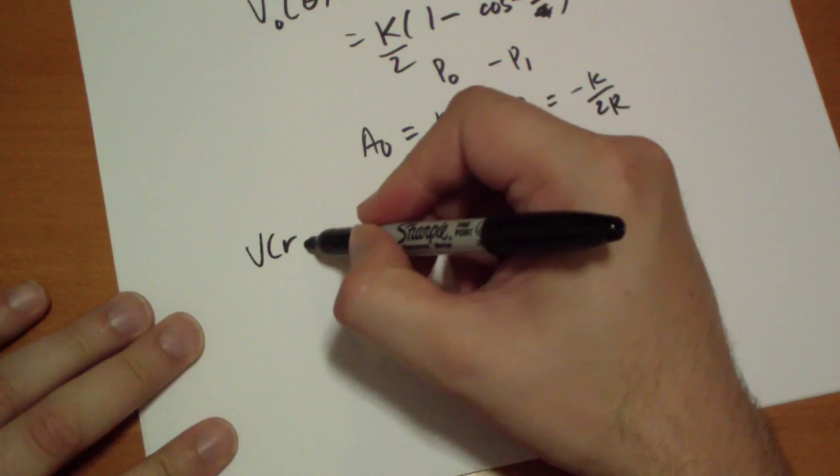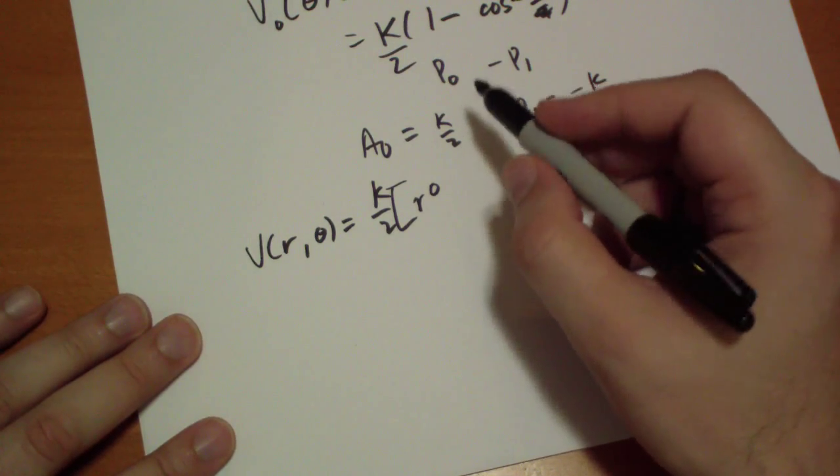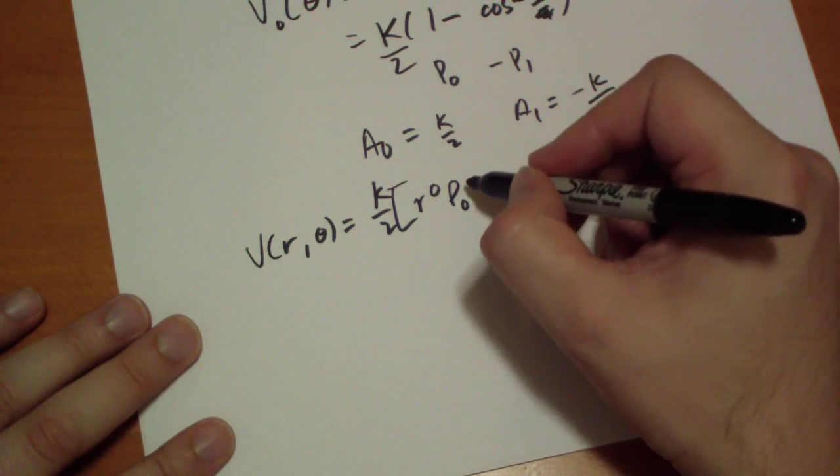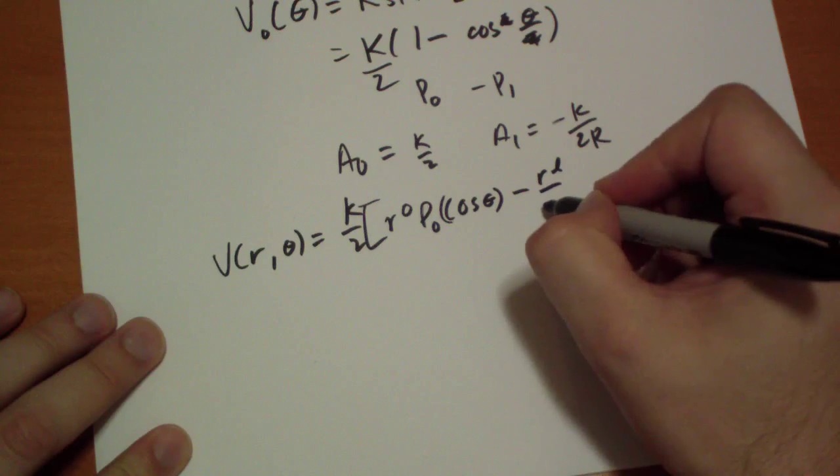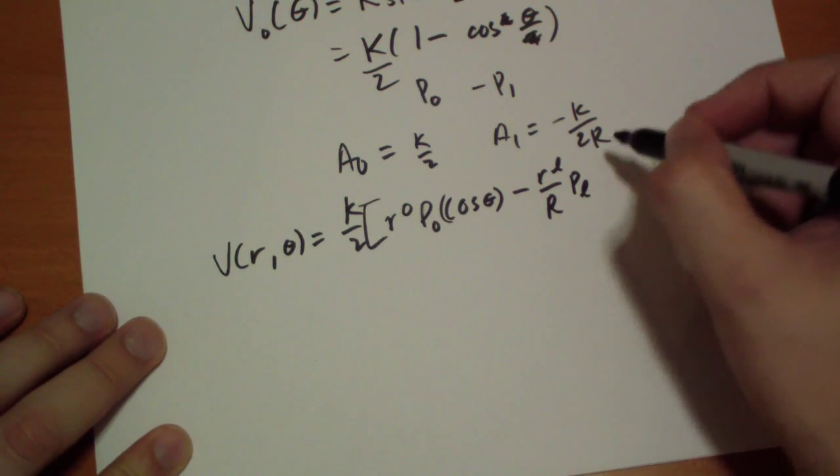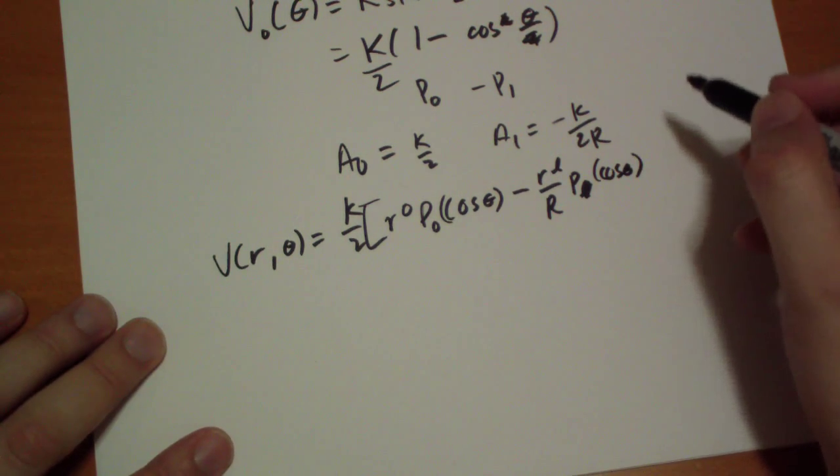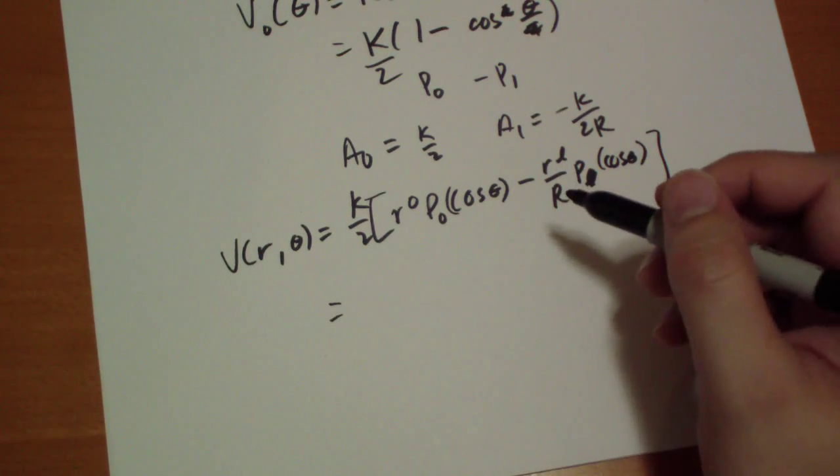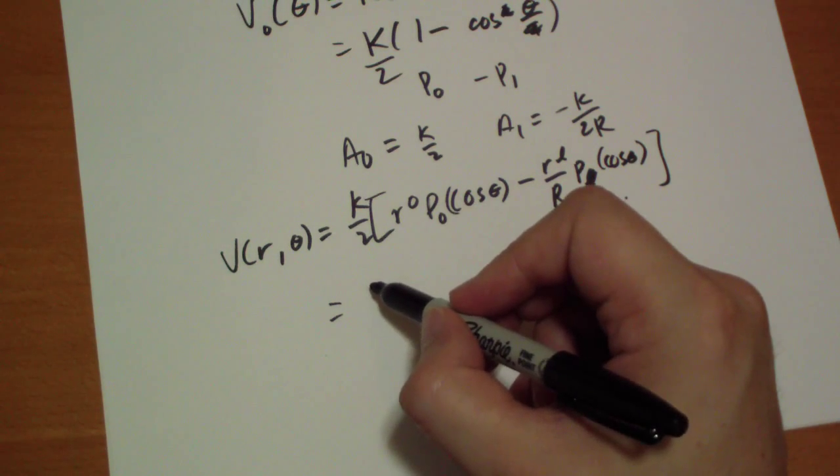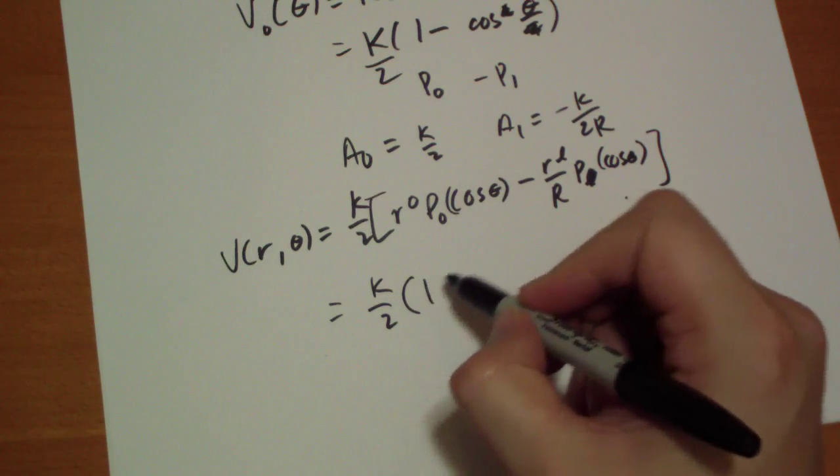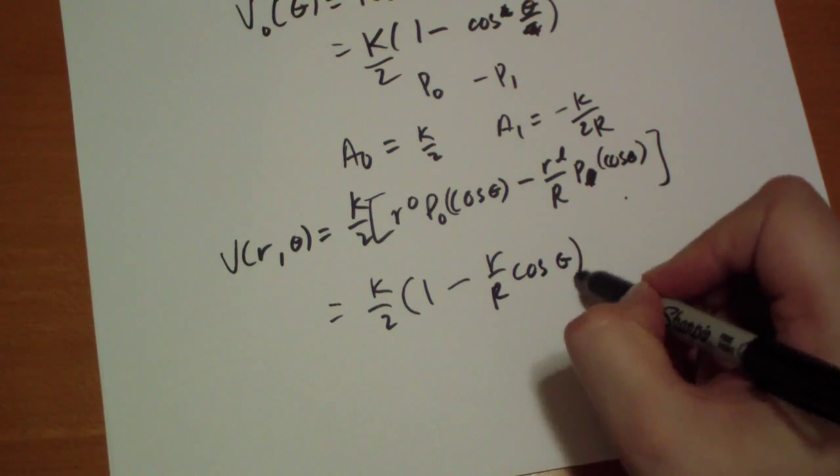So we can write it out as v of r theta is equal to k over 2 r to the 0, the 0th Legendre polynomial of cos theta, minus r to the l over R of the Legendre polynomial 1—sorry that's a 1 not an l. And simplifying that because this is just 1 and this is just cos theta, so we get k over 2 of 1 minus r over R cos theta. That's it.